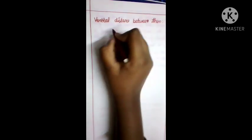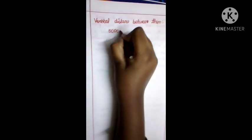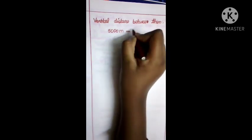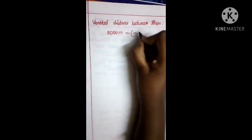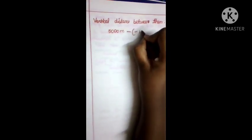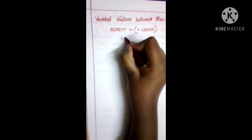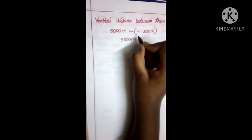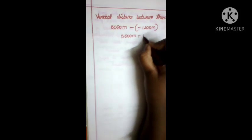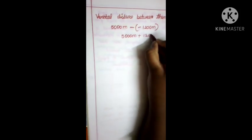5000 meters minus minus 1200 meters. So 5000 minus minus makes plus 1200, which is 6200 meters.